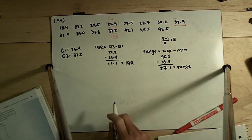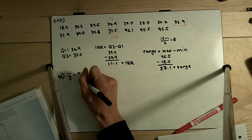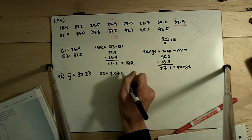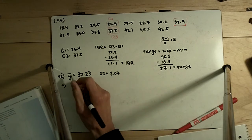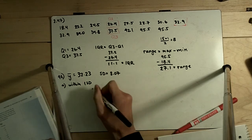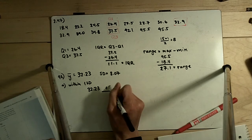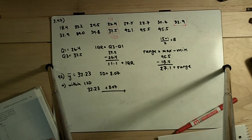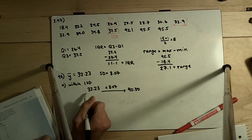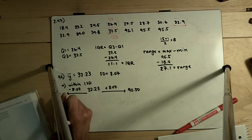Exercise 248 tells us that the sample mean, or Y-bar, is equal to 32.23 meters, and the standard deviation is equal to 8.07 meters. Part A asks how many values are within one standard deviation of the mean. We put the mean in the middle and go up one standard deviation: 32.23 plus 8.07 takes us out to 40.30. Going one standard deviation in the opposite direction, we subtract 8.07 and get 24.16.